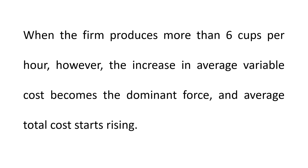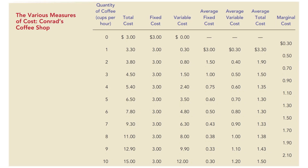When the firm produces more than 6 cups per hour, however, the increase in AVC becomes the dominant force and average total cost starts rising. We can see that when the firm is producing more than 6 cups of coffee, average total cost has started increasing: from $1.30, to $1.33, then $1.38, $1.43. The decrease in AFC at that point is about 0.07, while the increase in AVC is 0.10.